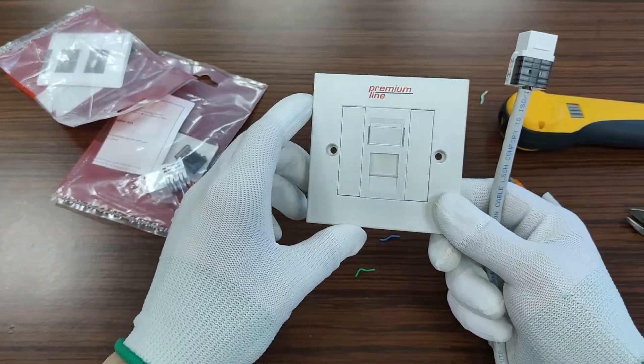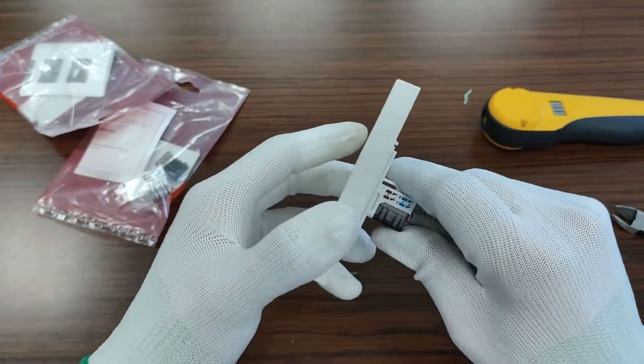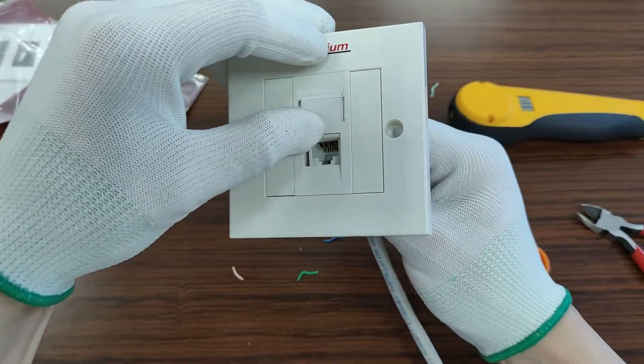Most often, 90-degree keystones are used for installation in sockets. Now you can see how easily the keystone is installed in the face plate with the shutter.